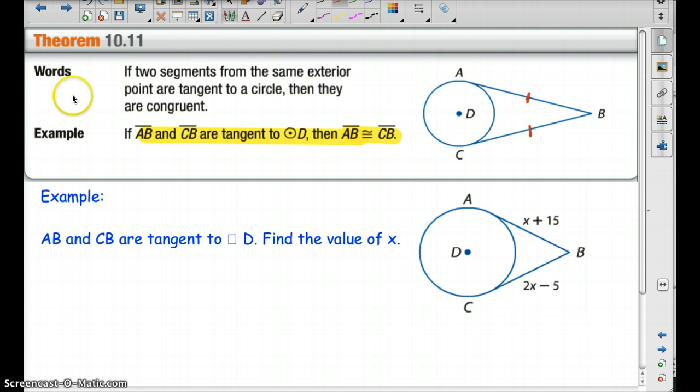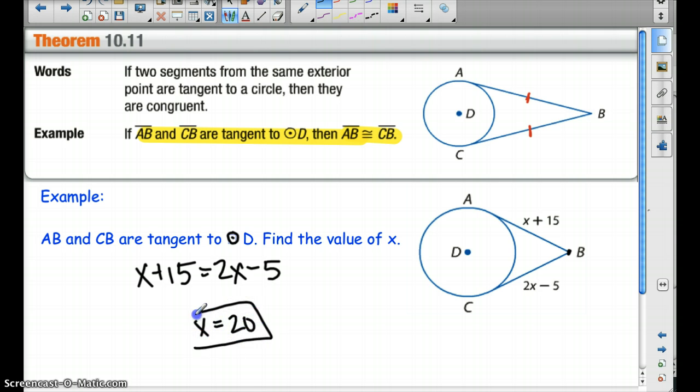So if two segments from the same exterior point are tangent to a circle, then they are congruent. So we have this point out here. If these two lines are tangent to the circle, then these two lines, we can say, are congruent. So let's work this example out. AB and CB are tangent to circle D, find the value of X. So since we know that these are tangent, and they both come to this exterior point here, we know that they are equal to one another. So when we solve this, you should get X equals 20.